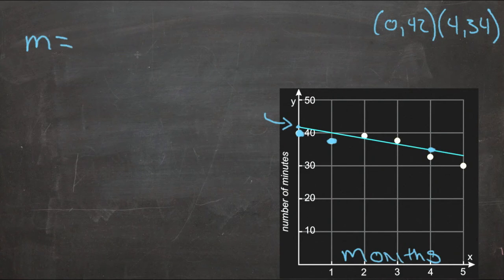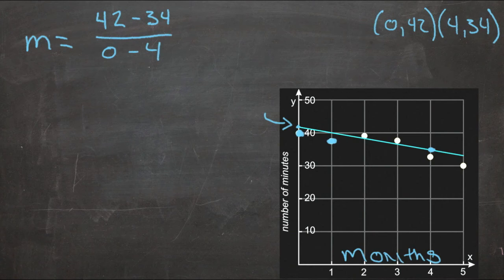Which is our rise over our run, and the rise is the difference in y's, so 42 minus 34, and our run is the difference in x's, so 0 minus 4. 42 minus 34 is 8, and 0 minus 4 is negative 4, so our slope, then, is negative 2.